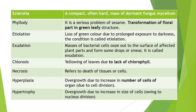Next is scab: referred to as a roughened or crust-like lesion or freckled appearance of the diseased organ, found in potato where the outer surface becomes hard and rough. Next is sclerotia: a compact hard mass of dormant fungal mycelium. Next is phylody: a serious problem of sesame where transformation of floral parts into green leafy structures occurs. Next is etiolation: loss of green color due to prolonged exposure to darkness.